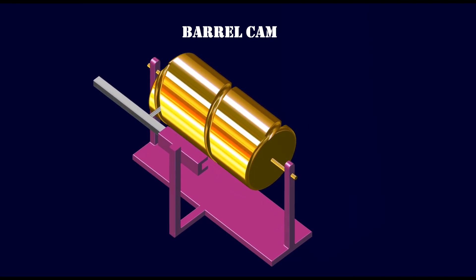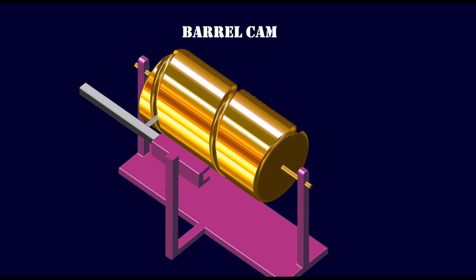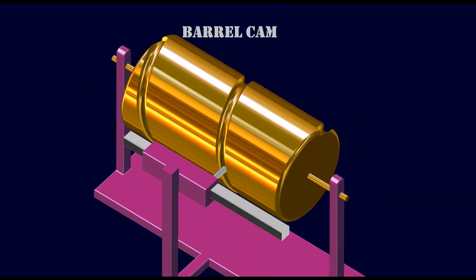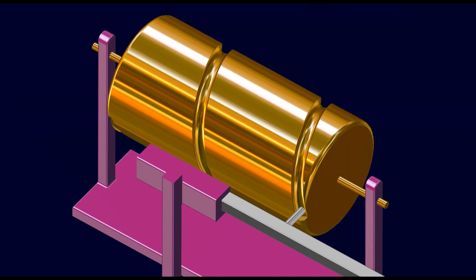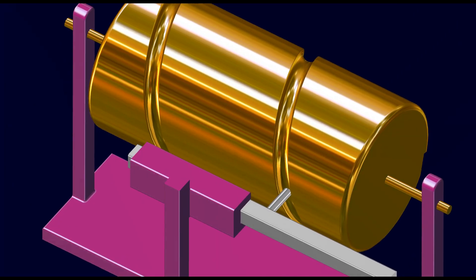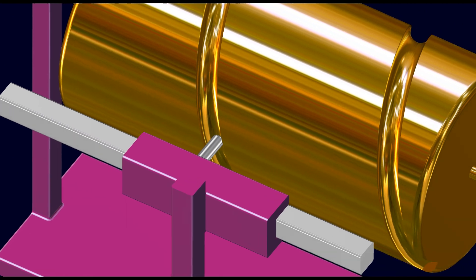Cylindrical cams can provide motions that involve more than a single rotation of the cylinder, and generally provide positive positioning, removing the need for a spring or other provision to keep the follower in contact with the control surface.